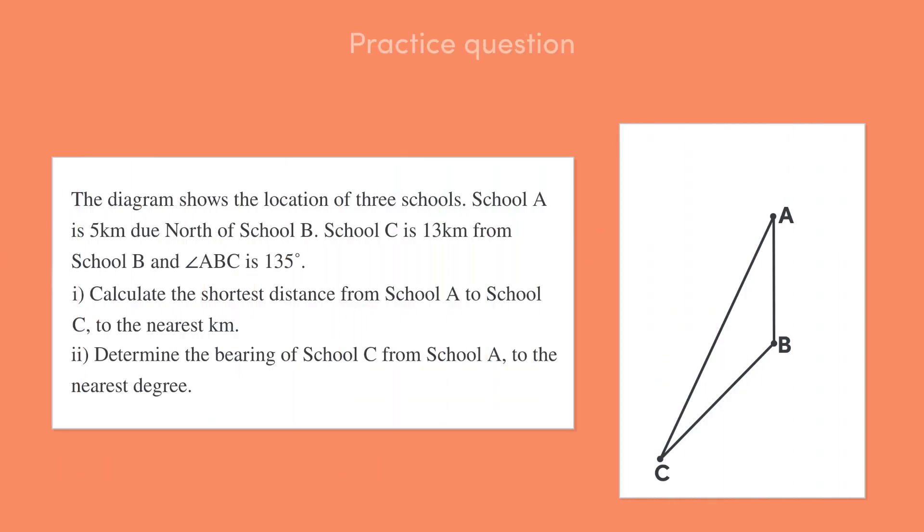The diagram shows the location of three schools. School A is 5km due north of School B, School C is 13km from School B, and Angle ABC is 135 degrees. Firstly, calculate the shortest distance from School A to School C to the nearest kilometre. Secondly, determine the bearing of School C from School A to the nearest degree.